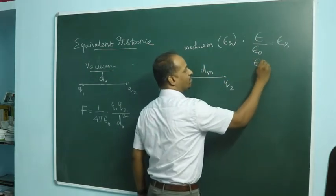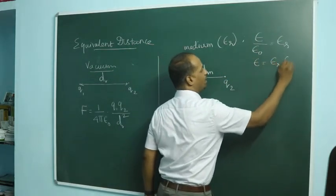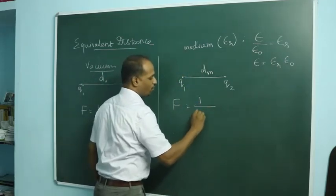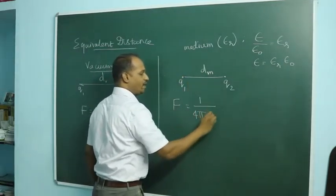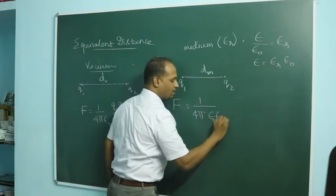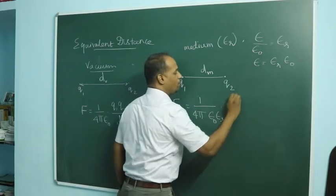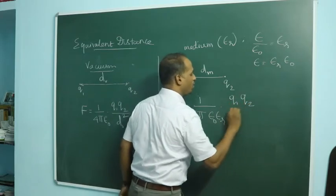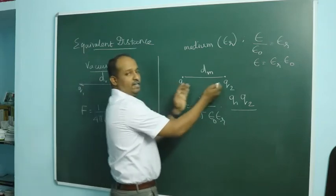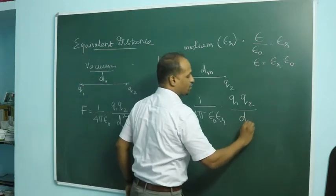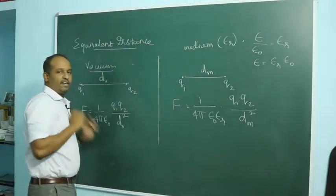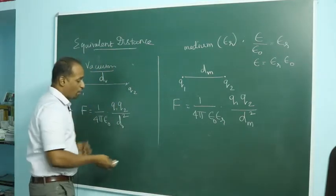The permittivity of the medium is equal to epsilon r times epsilon_naught. So we write F equals 1 over 4 pi times epsilon_naught times epsilon r, times q1 q2, divided by D_medium squared. The distance D_vacuum is different from D_medium. Since the left-hand sides are equal, their right-hand sides must also be equal.